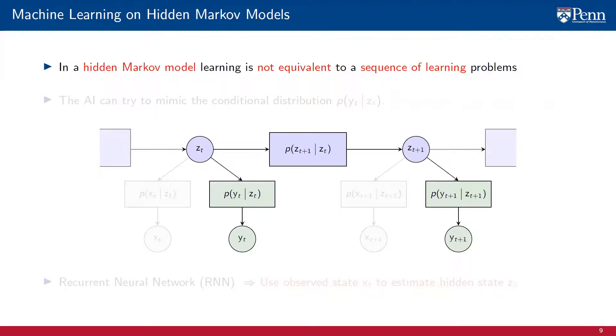Given the state zt of the hidden process, the probability distribution of the observation yt is completely determined. We don't need to know the history of the process if we know zt.